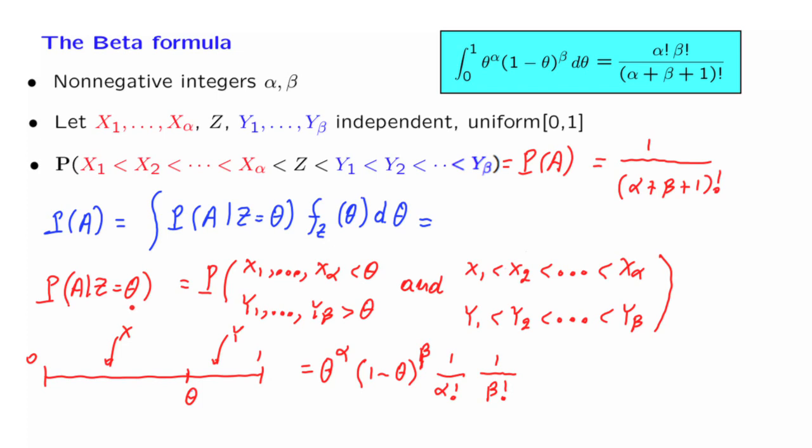So we have this conditional probability, and now we can go back to this formula and substitute. And what we obtain is the integral of this expression: theta to the alpha, 1 minus theta to the beta, 1 over alpha factorial times 1 over beta factorial. Then we have the density of Z, but since Z is uniform, the density is equal to 1, and then we have a factor of d theta.